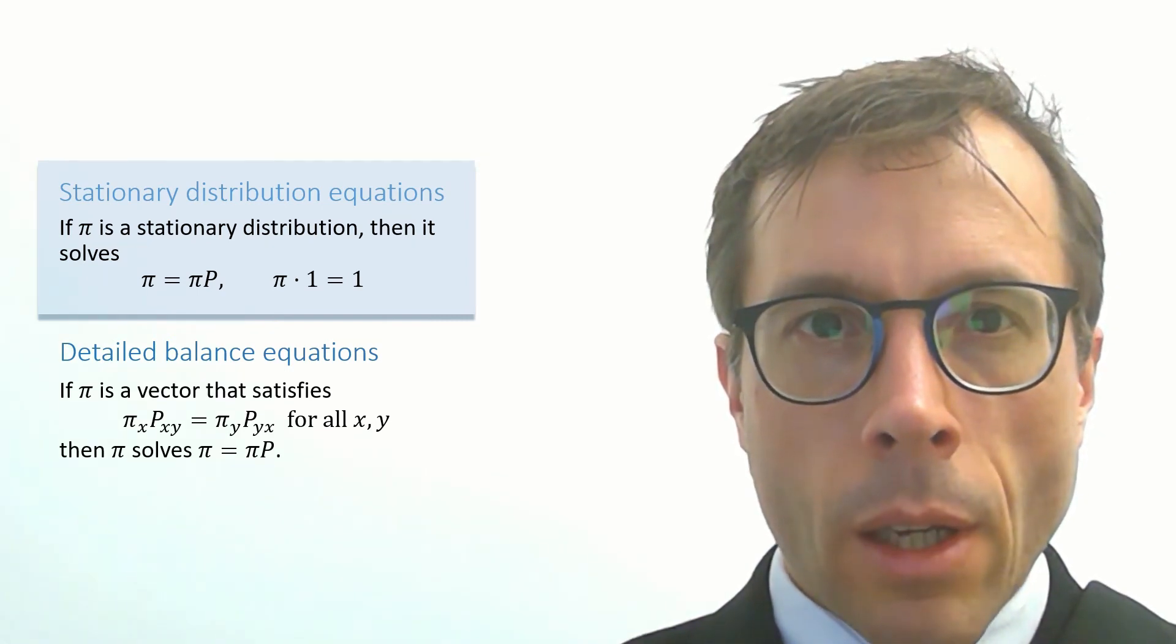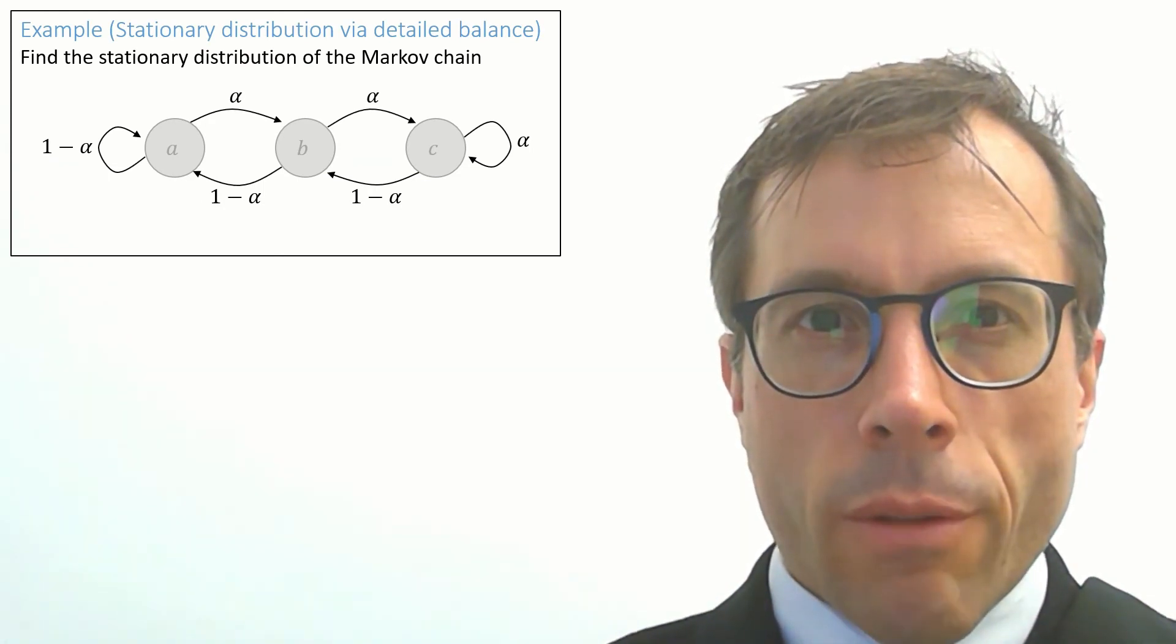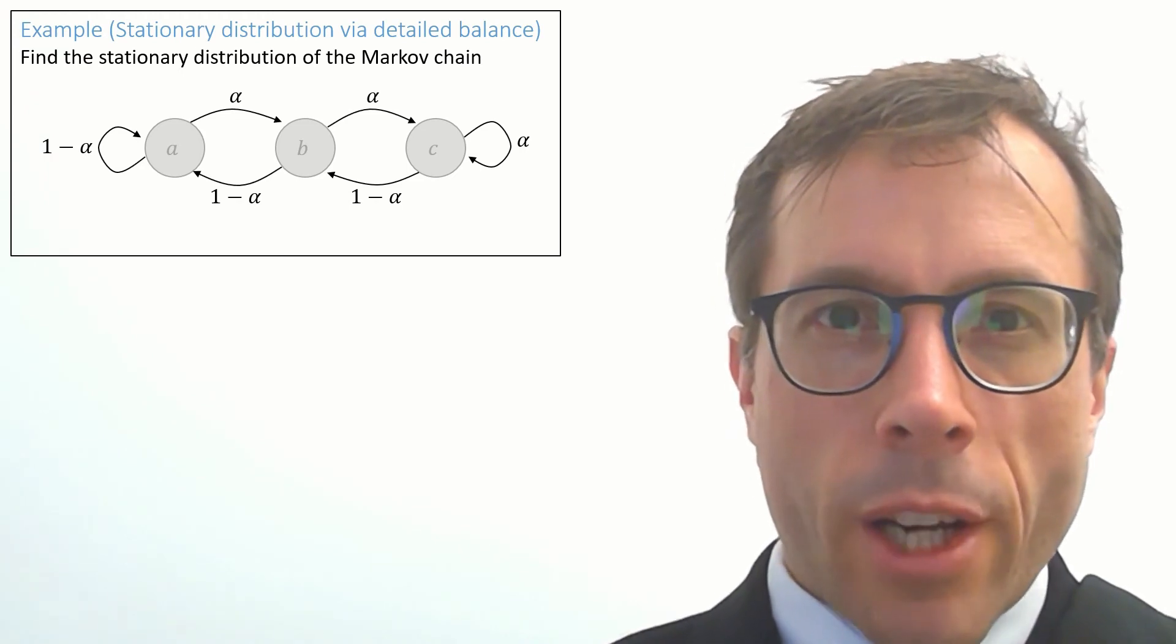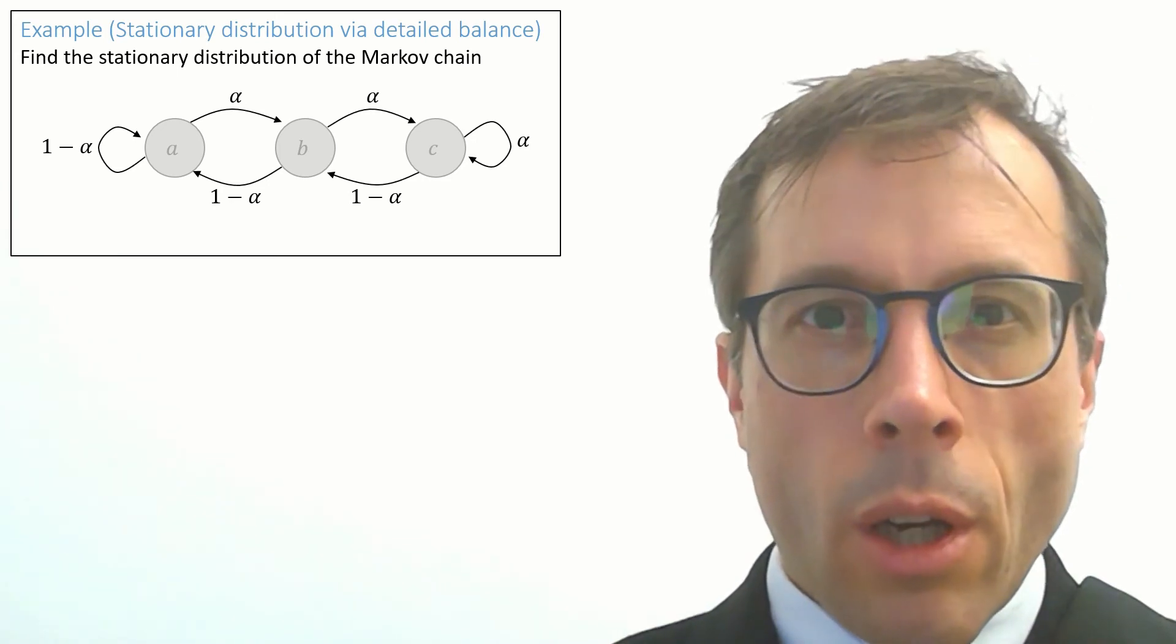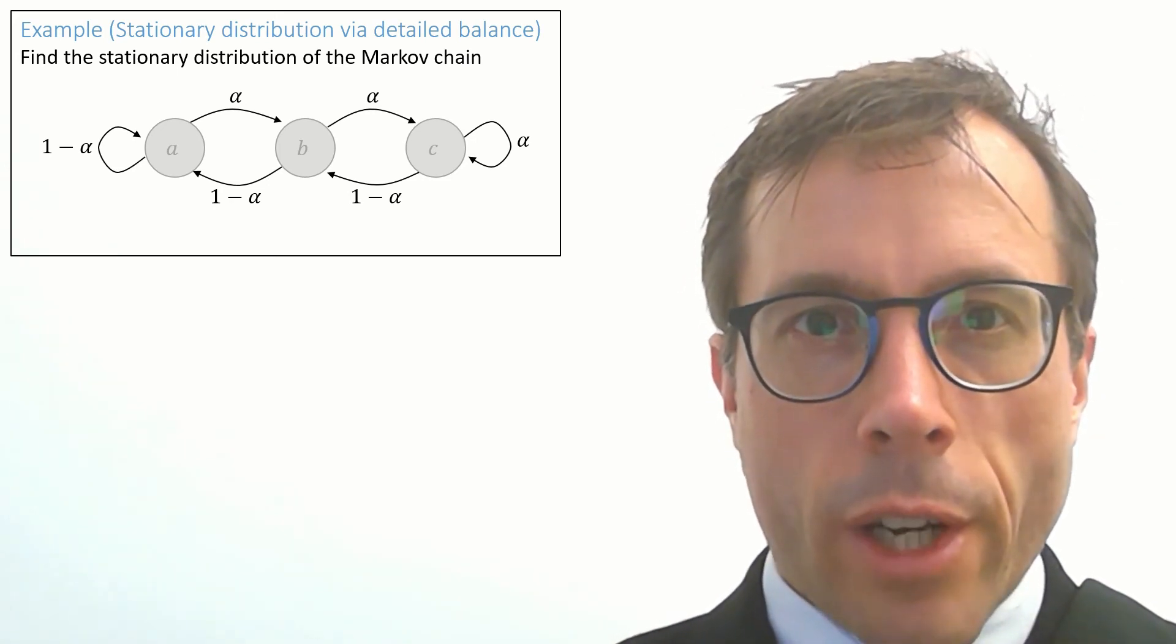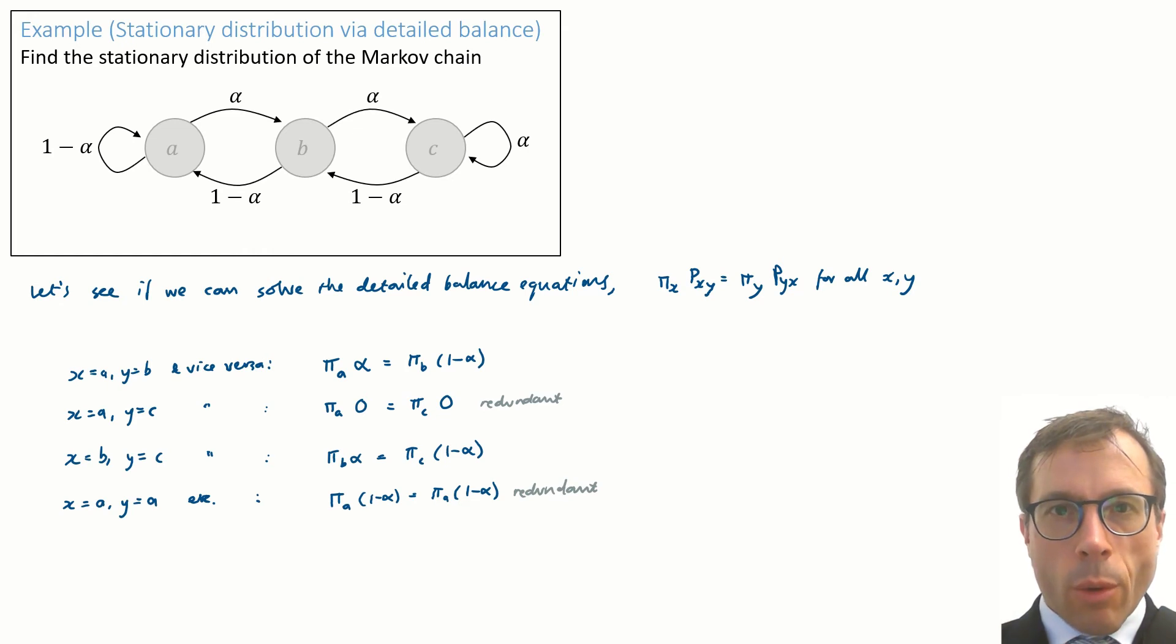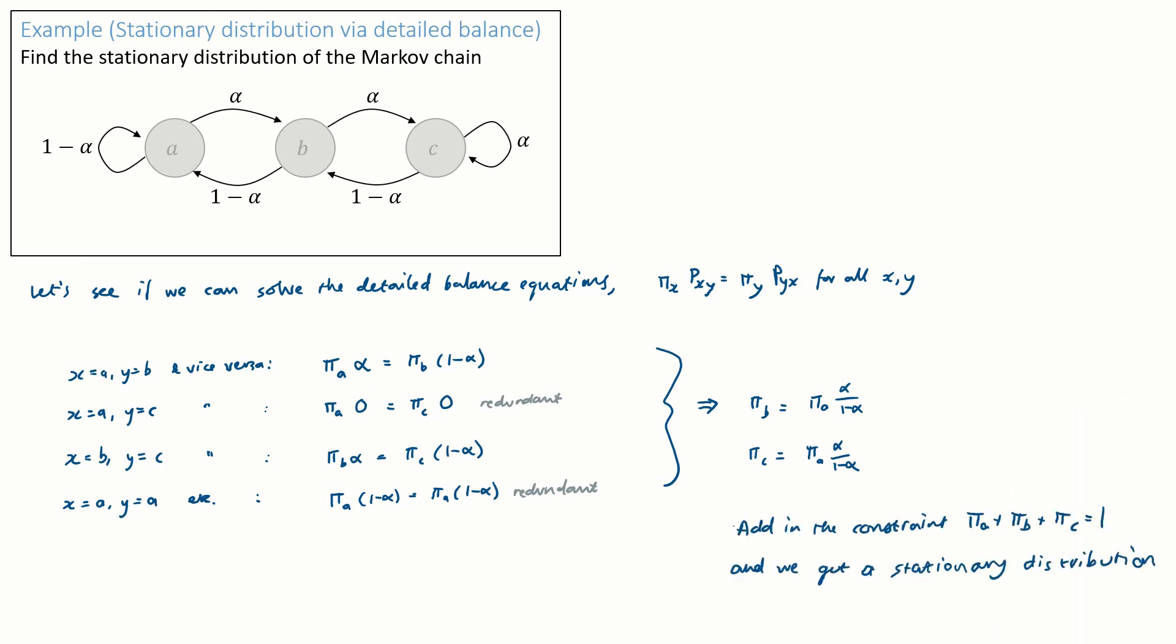Okay, here's an example. We're asked to find the stationary distribution for this Markov chain. It never hurts to try to solve detailed balance for any Markov chain at all. Either we solve it and it gives us a stationary distribution without much work, or we quickly find that it can't be solved and we have to go back to the full stationarity equations. So let's try solving it. We want to find a vector π satisfying this equation for every pair of states x and y. We just write out a bunch of equations, one for every possible pair of states x and y. Some of these equations are redundant, but we can just solve the equations that are left, and then stick in the constraint that we're looking for a distribution—i.e., that π_a + π_b + π_c have to sum to one—and we get a solution. So this was an easy way to find the stationary distribution.